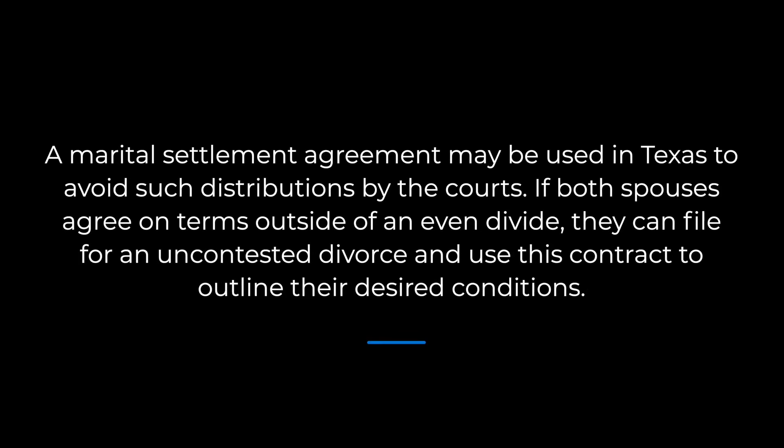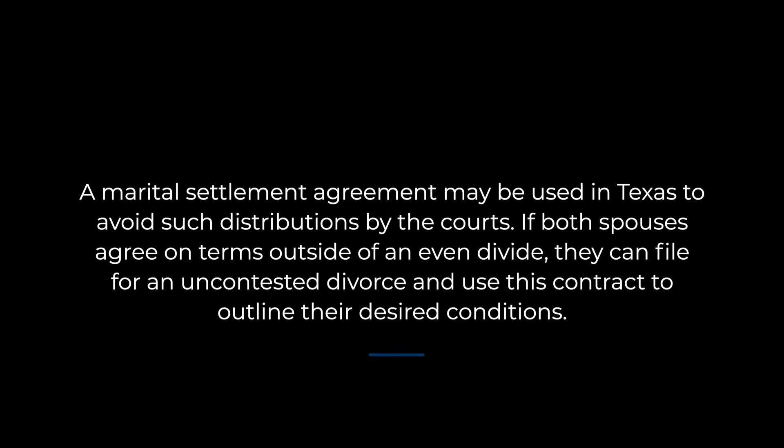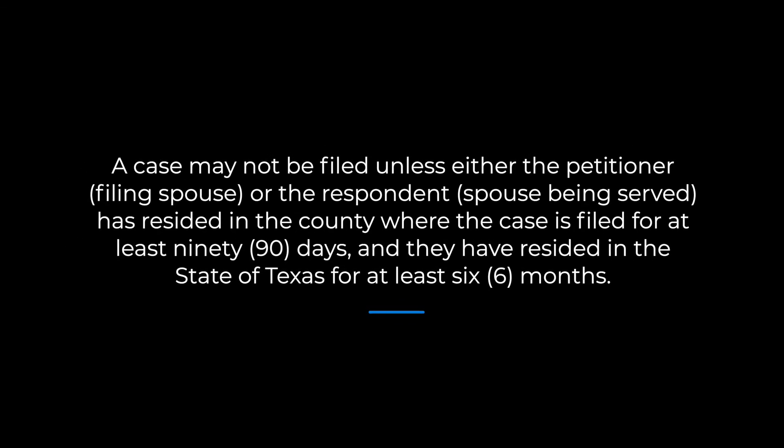Note, however, a marital settlement agreement may be used in Texas to avoid such distributions by the courts. If both spouses agree on terms outside of an equal divide, they can file for an uncontested divorce and use this contract to outline their desired conditions. One more legal requirement to keep in mind involves residency. A case may not be filed unless either the petitioner, the filing spouse, or the respondent, the spouse being served, has resided in the county where the case is filed for at least 90 days, and they have resided in the state of Texas for at least six months. The process usually takes around 60 days upon the filing of the divorce case.